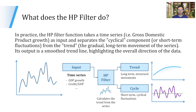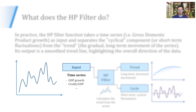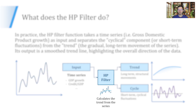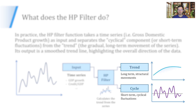So what does the HP filter do? In practice, the HP filter function takes a time series like GDP growth as input and separates the cyclical component — short-term fluctuations — from the trend, the gradual long-term movement of the series. Its output is a smooth trend line highlighting the overall direction of the data. So we have the input like GDP growth, credit to GDP, or other macroeconomic variables. We have the function itself that calculates the trend from the series, and then we can also calculate the cycle by subtracting the trend from the actual series.